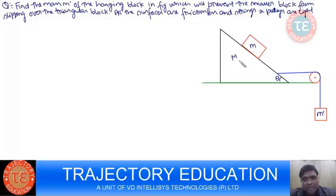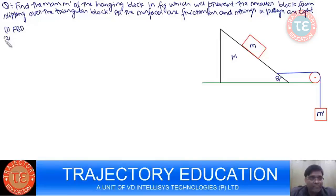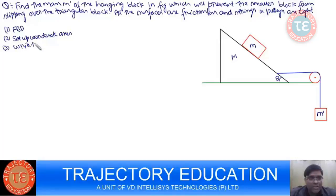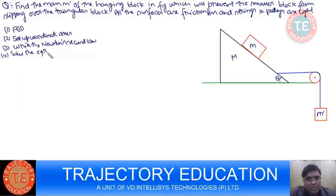So first thing we have to do — I told you in the earlier example — there are four steps we follow when solving every mechanical problem. One: we first draw the free body diagram. The second thing we will do is set up the coordinate axis. Third thing we will do is write the equation — Newton's second law. And then we solve the equation. So these are the four steps that we follow.